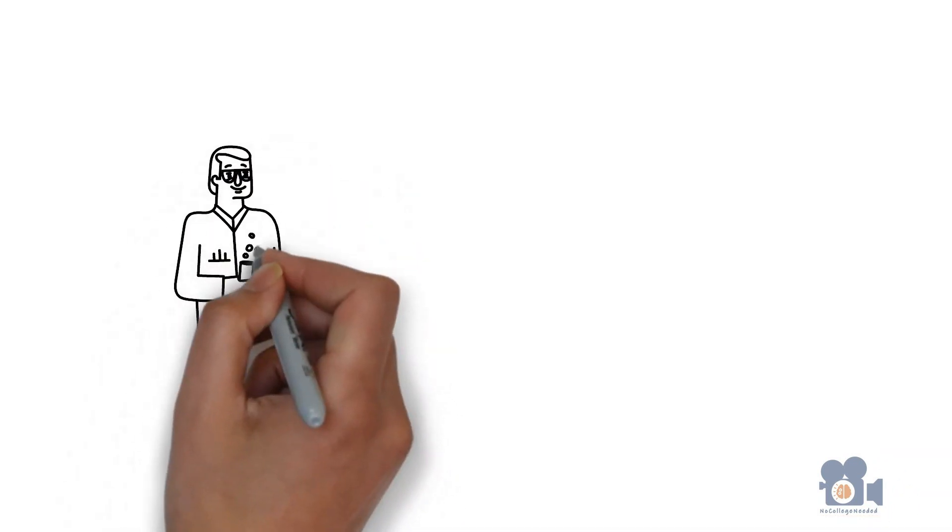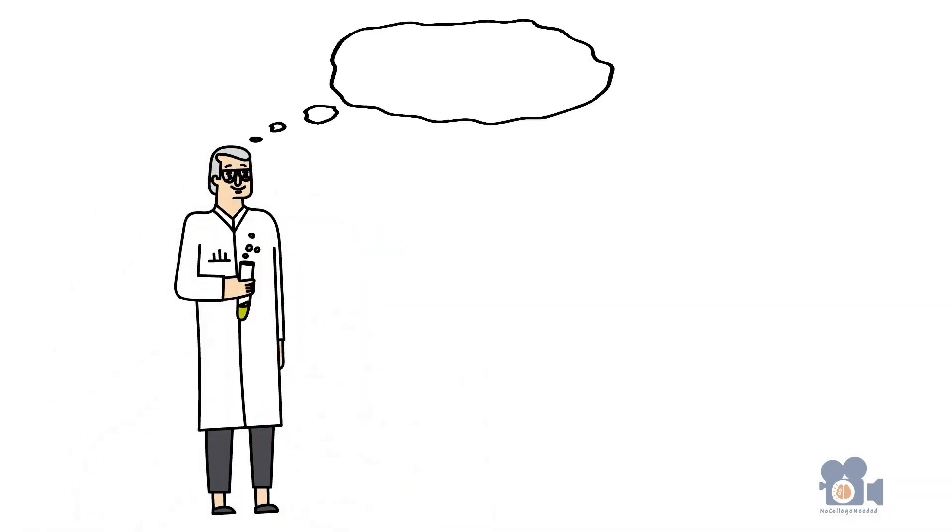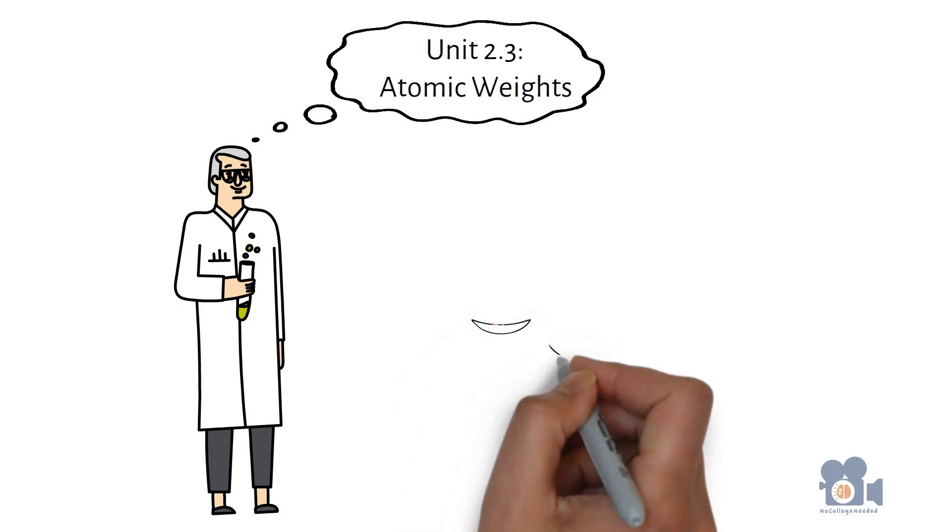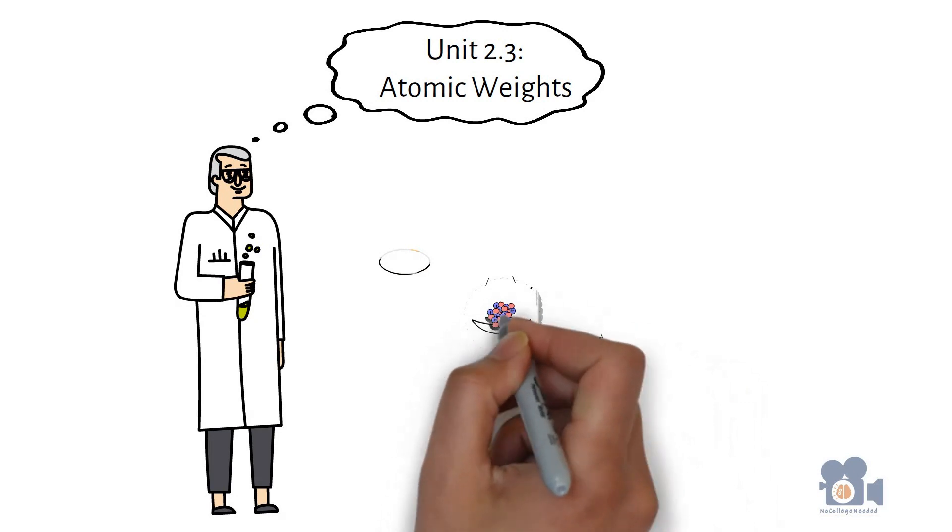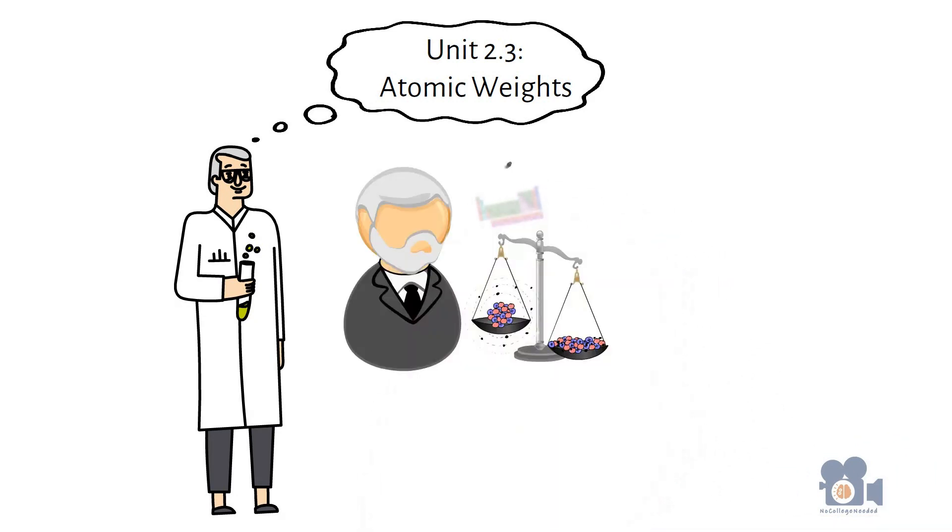Today we're delving into unit 2.3 of the first half of general chemistry, which goes over atomic weights. Atoms are technically small bits of matter, so therefore they have mass. However, atoms of different elements do not always weigh the same.